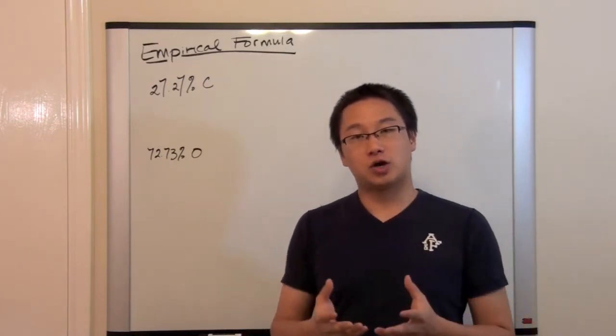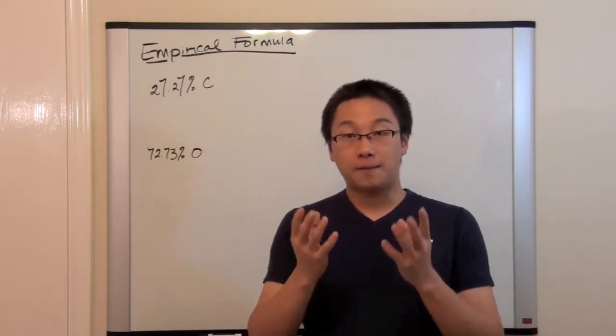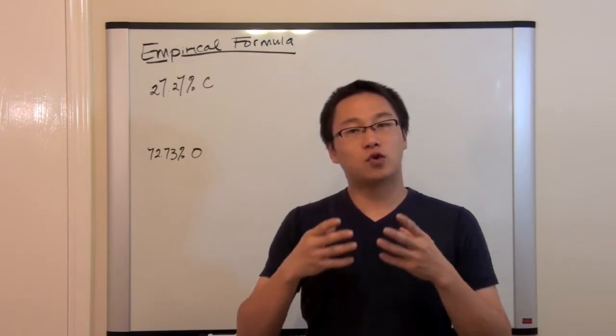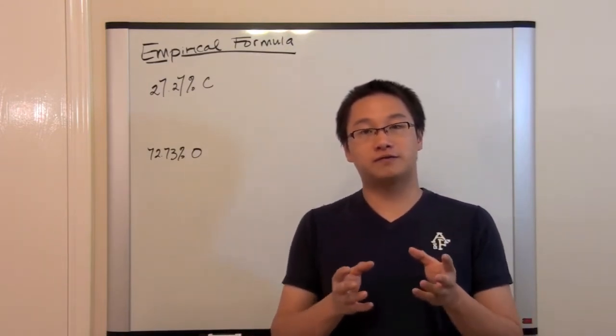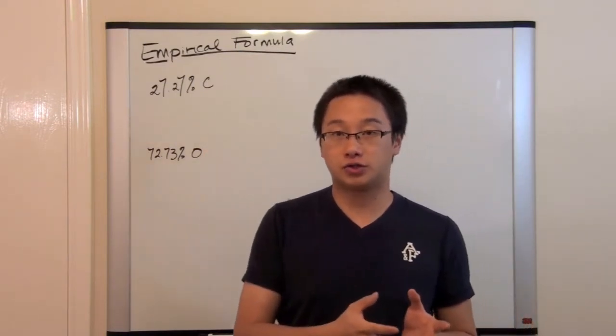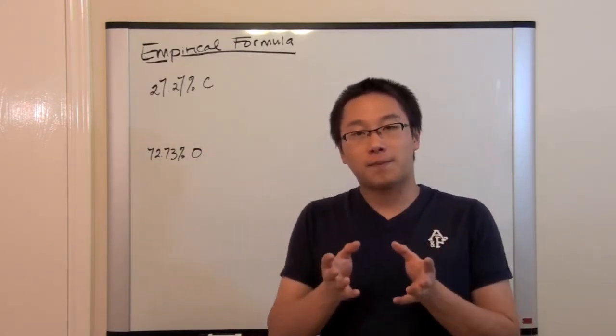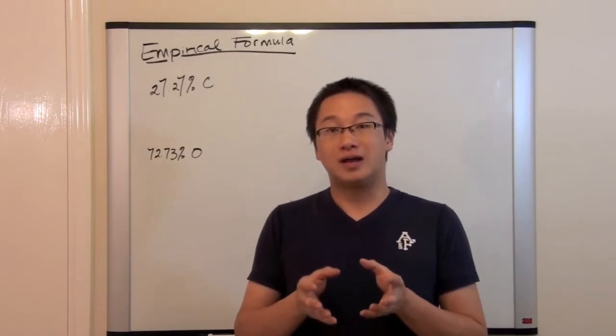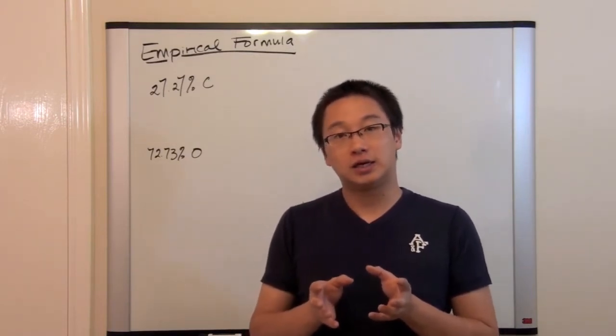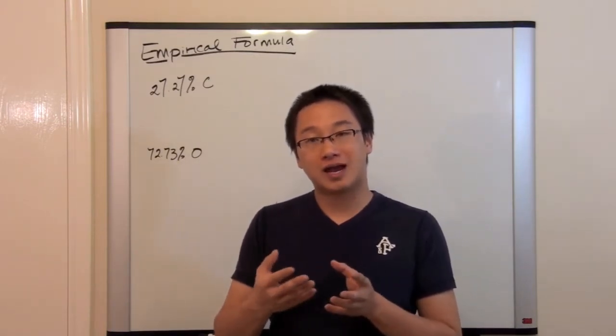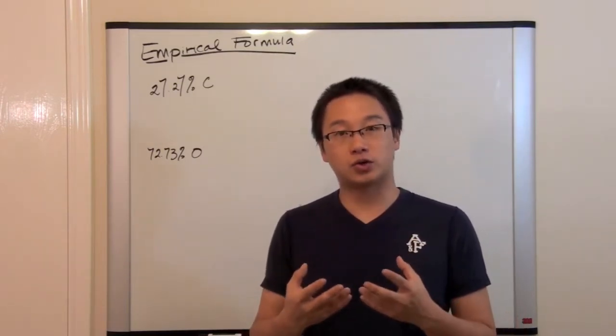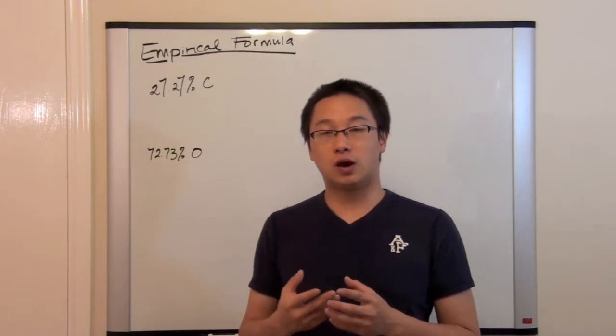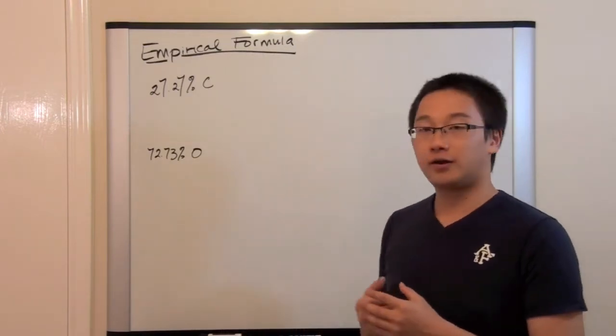Now one of the basic understanding of empirical formula is that you have to understand that a compound is composed of some elements and in here we have carbon and oxygen. And for a compound there is a fixed ratio in terms of the quantity. And we will see how we make use of the concept of the fixed ratio of the quantity to find out the chemical formula.